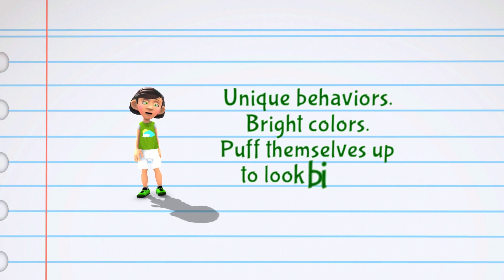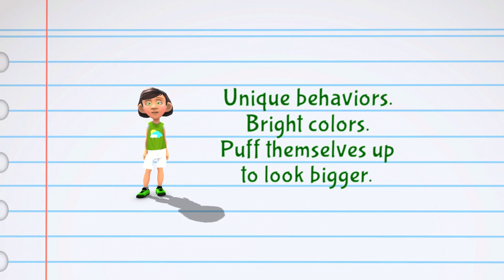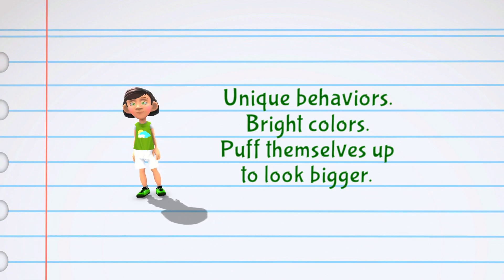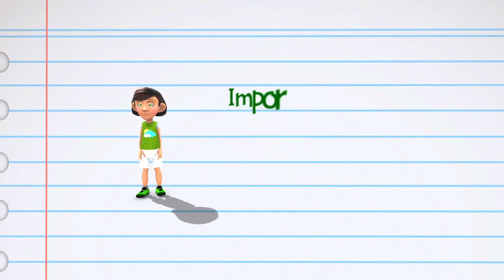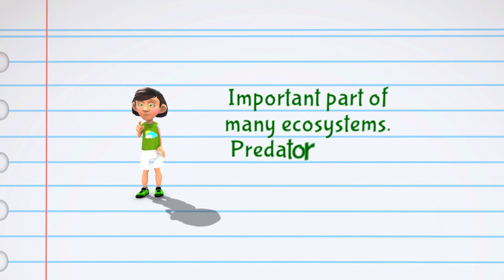In addition to their physical adaptations, amphibians also have unique behaviors. For example, some species use bright colors to warn predators that they are poisonous, while others can puff themselves up to look bigger and scare off predators.